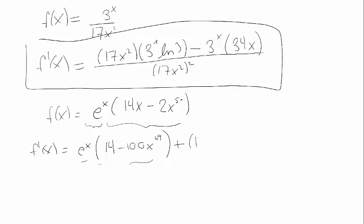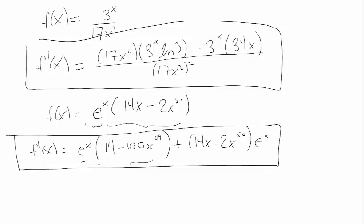Now I add the second function times the derivative of the first function. So here's the second function. And the derivative of e to the x is just e to the x. e is the one number where e to the x is its own derivative.